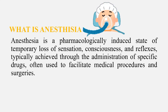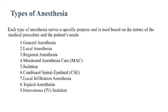The main purpose of anesthesia is so the patient may not feel the pain. There are also some minor purposes. The types of anesthesia — these terms depend on country guidelines and technologies. Some terms may differ by country. Each type of anesthesia serves a specific purpose and is used based on the nature of the medical procedure and the patient's need.